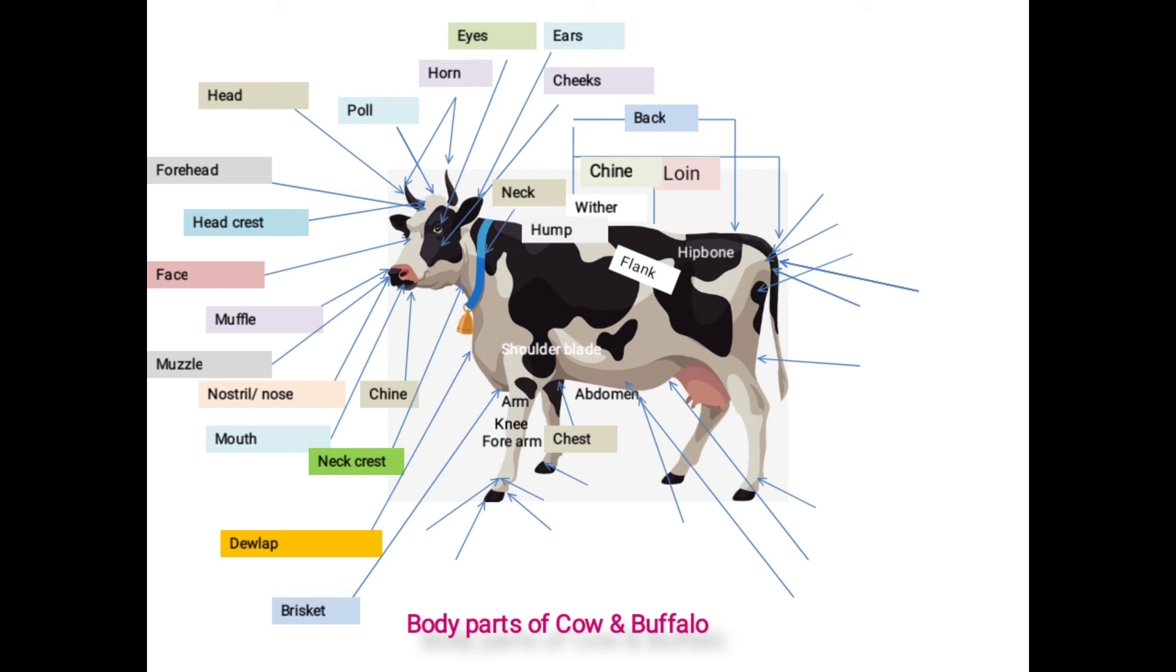Next one is shank. This is portion between knee and pastern. Next one is pastern: portion between shank and fetlock called as pastern. Next one is fetlock: the portion between pastern and coronet called as fetlock.